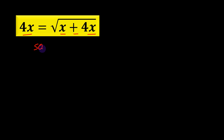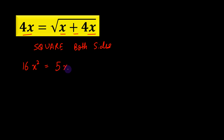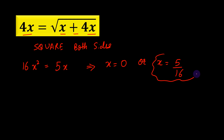Now what we are going to do is square both sides, thereby getting 16x squared equals 5x. This gives us two values: either x equals 0, or x equals 5 over 16. These are the only two possible solutions of the original equation. I hope you have understood everything taught in this video. Thank you.